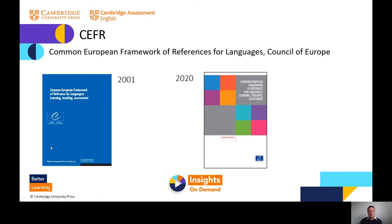If you know a little bit about the CEFR, you might know that it's been around a while. In fact, it was first published in 2001 in this blue book here. What you might not know is that it was recently updated. There has been a companion volume which was published last year, and it's important to note that the original 2001 version has been updated, not replaced. The companion volume is more up to date, has more things in it, and is more useful as well.